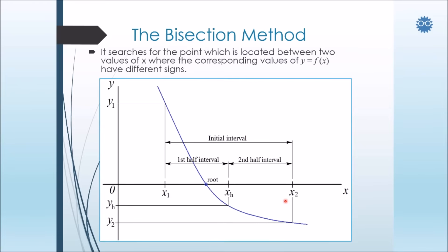The bisection method searches for the point which is located between two values of x, where the corresponding values of y have different signs. So let's see how the method works by using this figure. Now, first we should assume two values which form the initial interval x1 and x2.